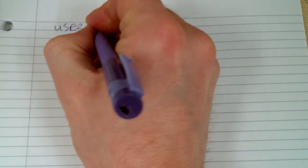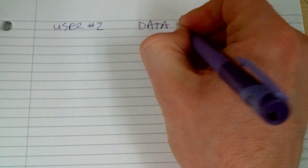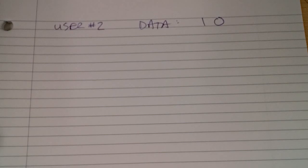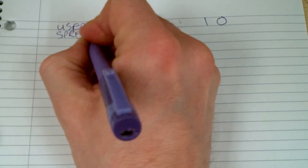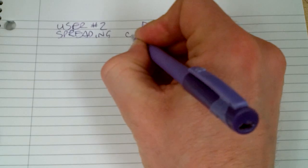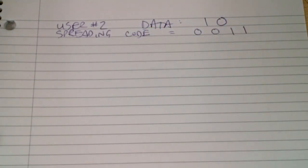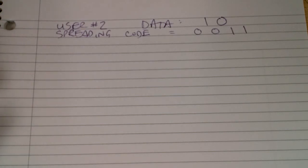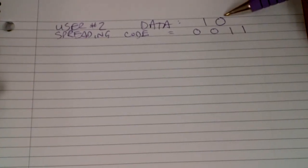We've already spread user one's data, and now we're going to do the same with user number two. User number two has some data — two bits: one and zero — and user number two has a spreading code as well. We're going to spread user number two's data the same way, except the data is different and the code is different.